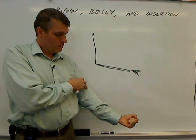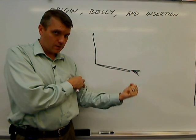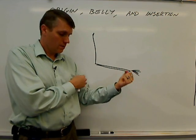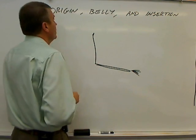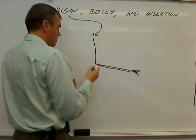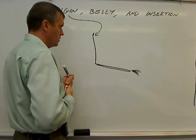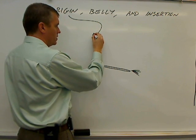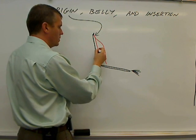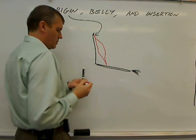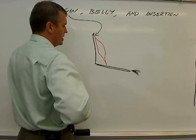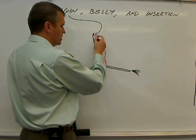The origin of the muscle is the part of the muscle that does not move when the movement is being performed. So for the biceps brachii, the origin is up here on the humerus, towards the top of the humerus. So the origin for the biceps brachii is the top of the humerus.